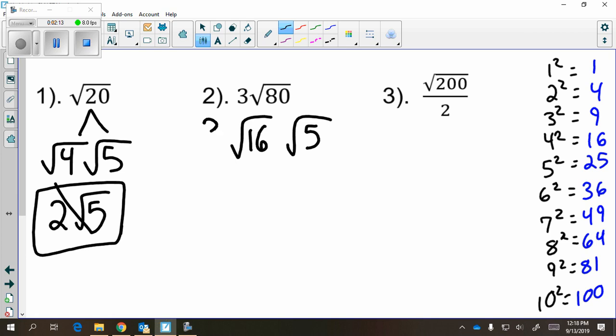We're just going to bring down the 3. And now, we can take the square root of 16, which is going to be 4. You can't take the square root of 5. You do need to multiply your two coefficients now. So 3 times 4 will give me 12 radical 5 as the simplified version of 3 radical 80.